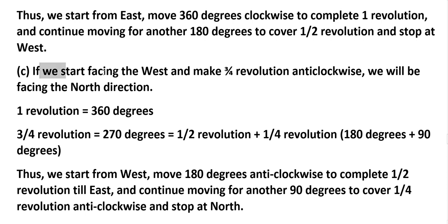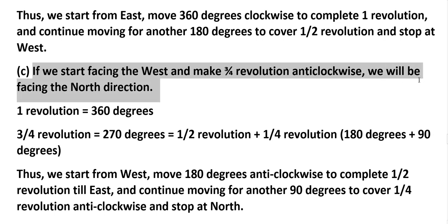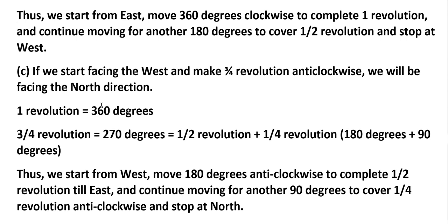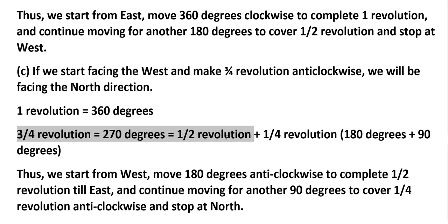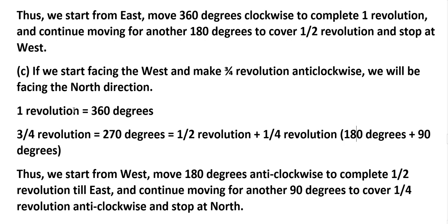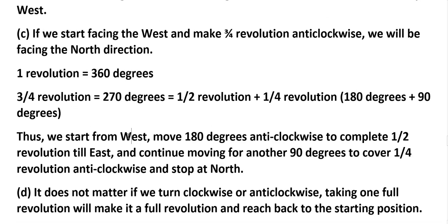C: if we start facing west and make three-fourths revolution anticlockwise, we will face north. One revolution is 360 degrees; three-fourths revolution is 270 degrees, which is half revolution plus one-fourth, that is 180 + 90 degrees. Thus, starting from west, moving 180 degrees anticlockwise reaches east, then continuing 90 degrees anticlockwise — one-fourth revolution — we stop at north.